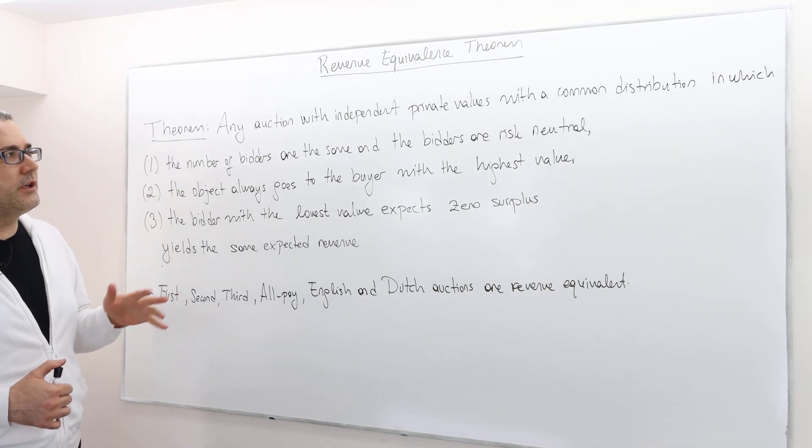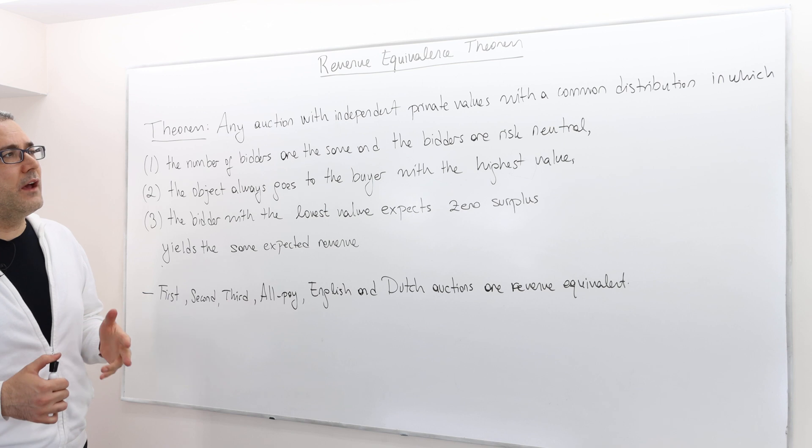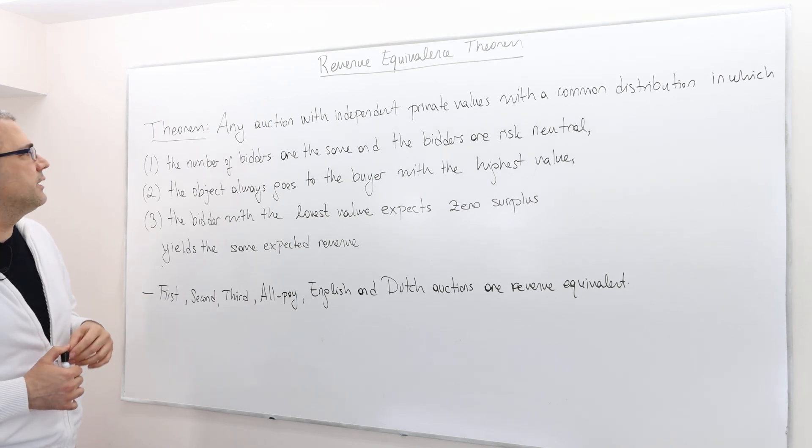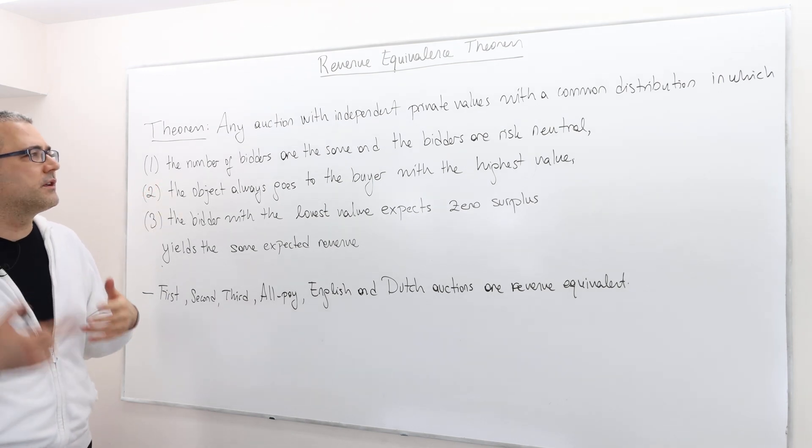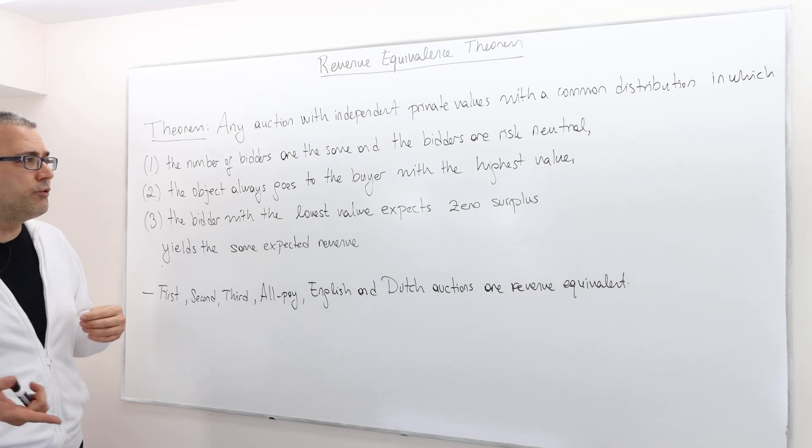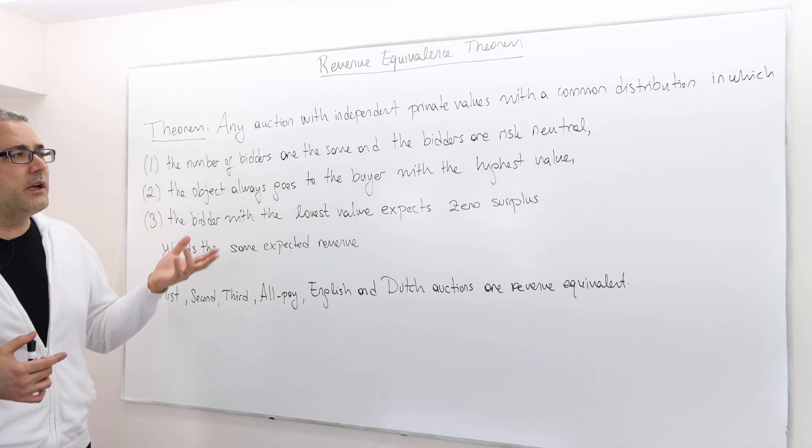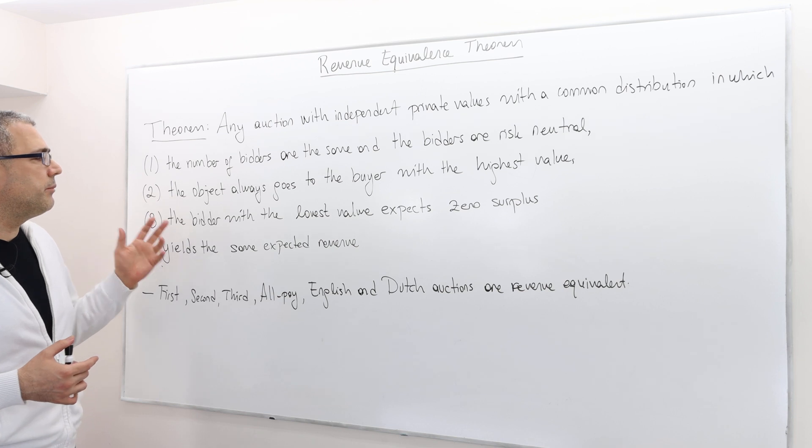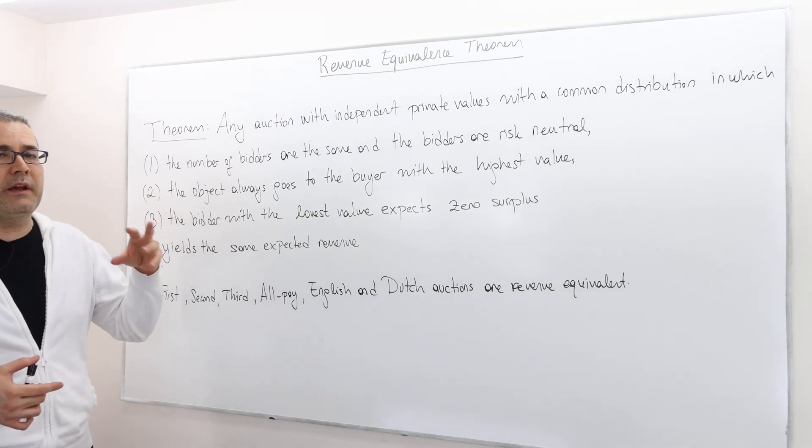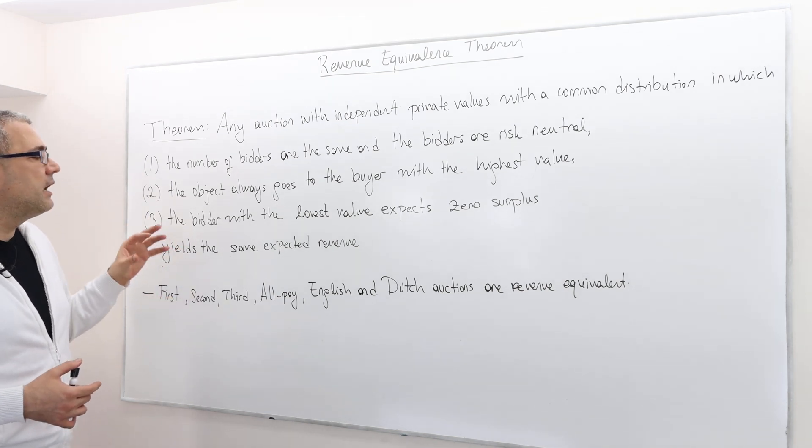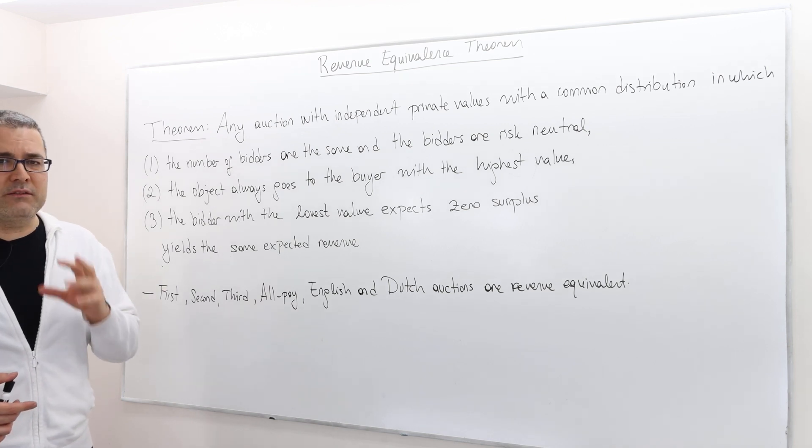Any auction with independent private values with a common distribution in which the number of bidders are the same and the bidders are risk neutral, the object always goes to the buyer with the highest value, the bidder with the lowest value expects zero surplus, yields the same expected revenue.